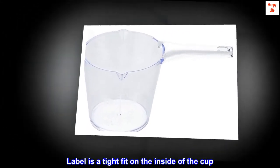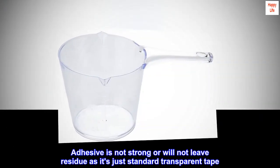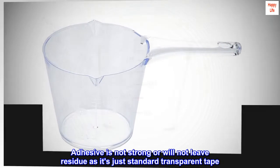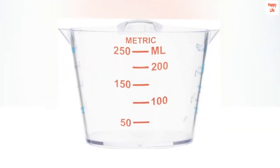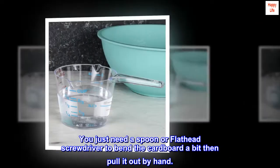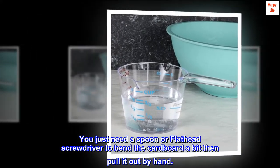Label is a tight fit on the inside of the cup. Adhesive is not strong or will not leave residue as it's just standard transparent tape. You just need a spoon or flathead screwdriver to bend the cardboard a bit then pull it out by hand.